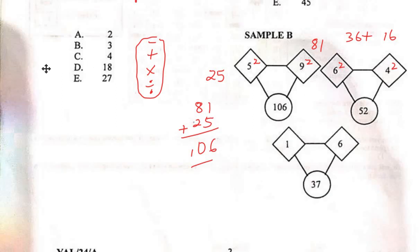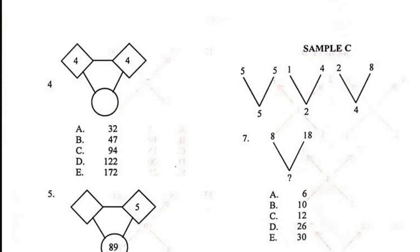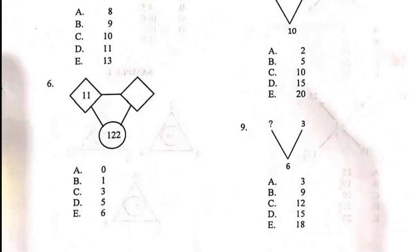For Question 4, based on the Sample B pattern: 4² = 4 × 4 = 16, and the right-hand side 4² = 16 as well. 16 + 16 = 32, which is option A.